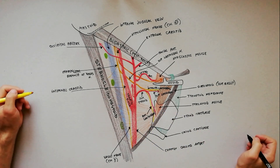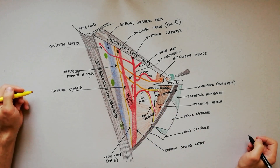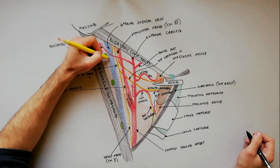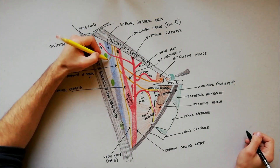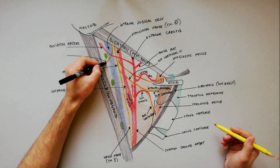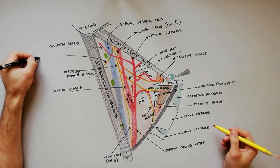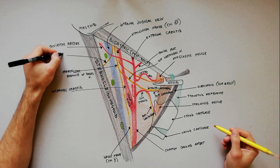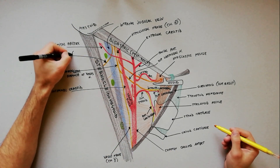The accessory nerve runs downwards and backwards across the upper part of the triangle, superficial to the internal jugular vein, to enter the sternocleidomastoid muscle, which it supplies.